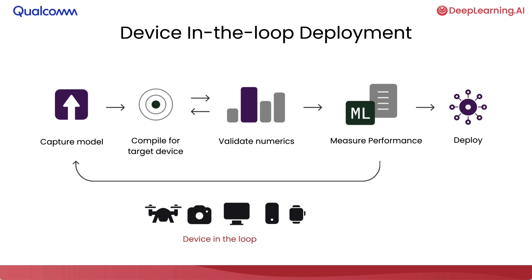When these four steps are done, you will have an artifact that you can deploy on a device and integrate into your application. To make this extremely seamless, you will be using Qualcomm's AI Hub, which automates all four steps — the capture, the compilation, the validation, and the performance measurement — along with a provided device, so you can go through this process in about five minutes.